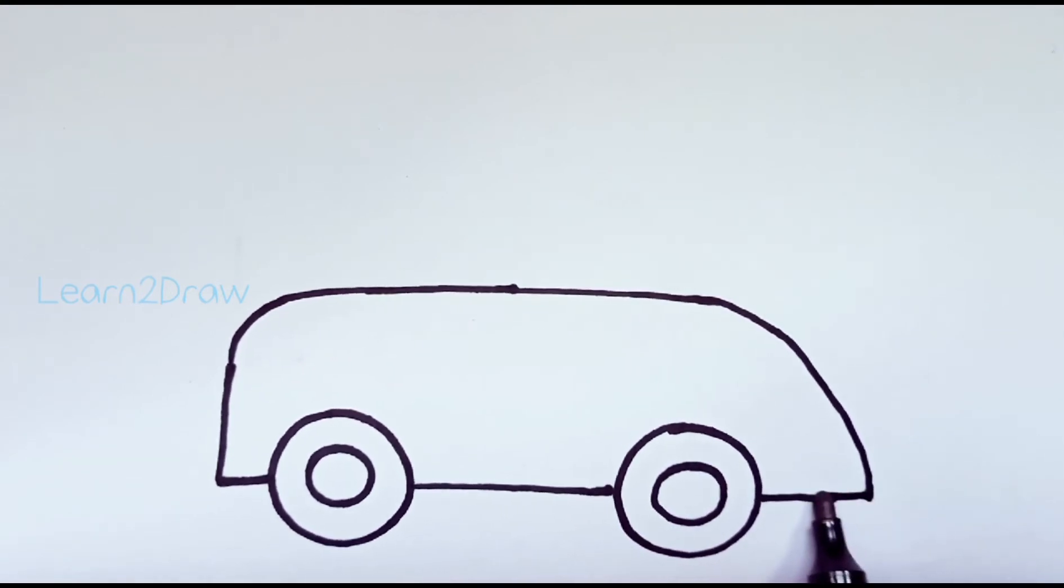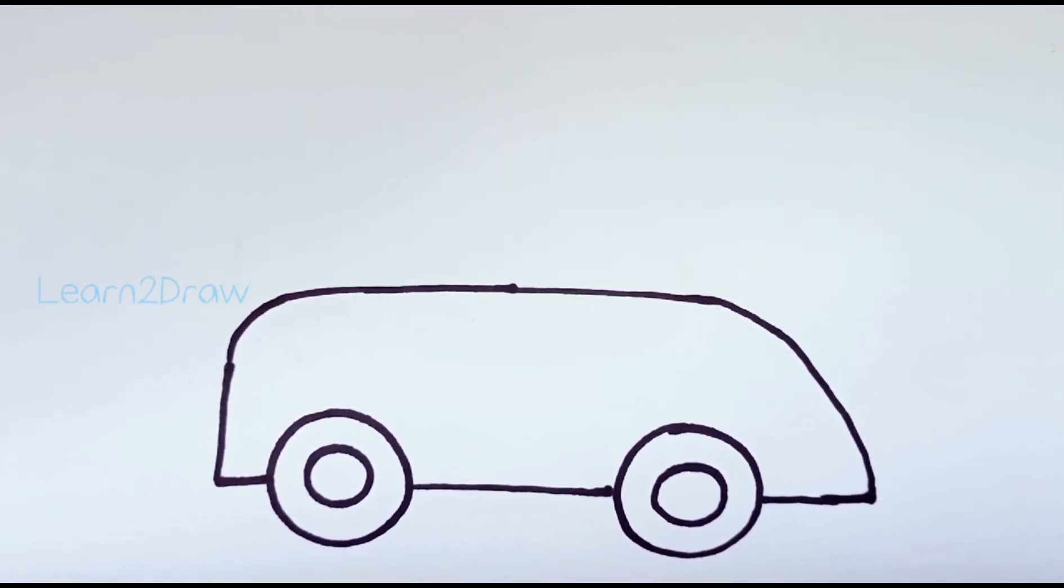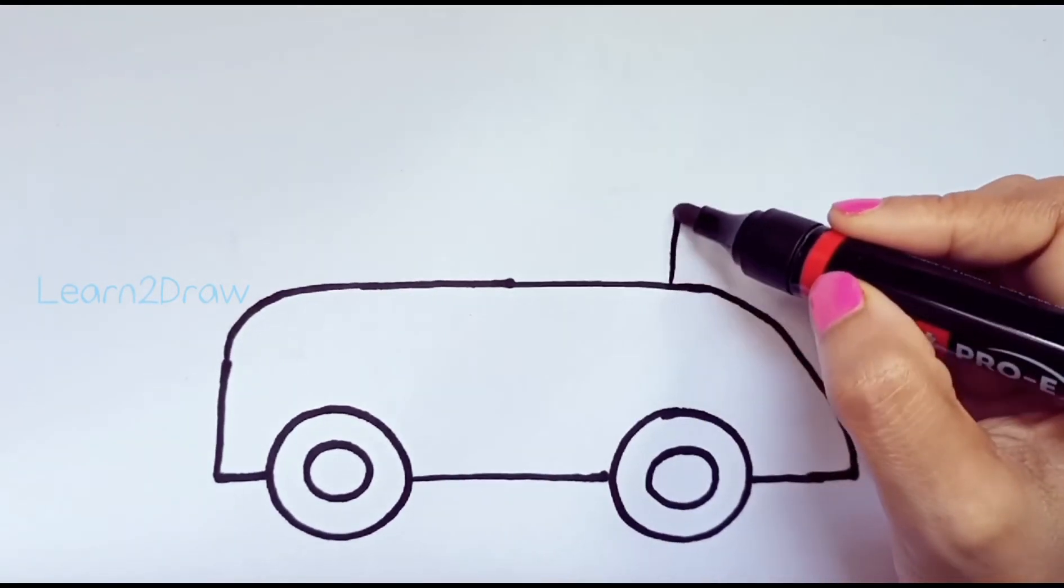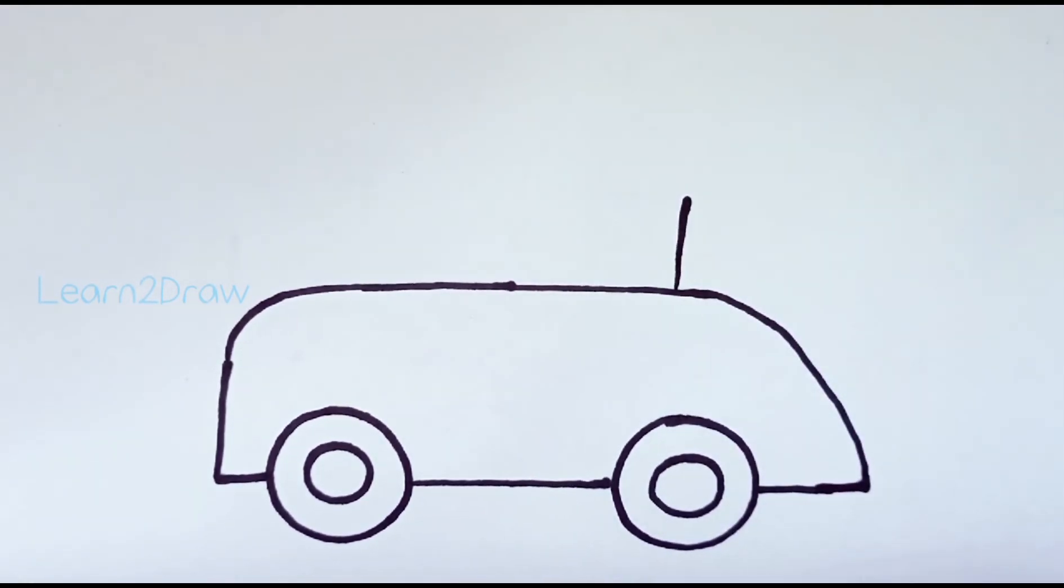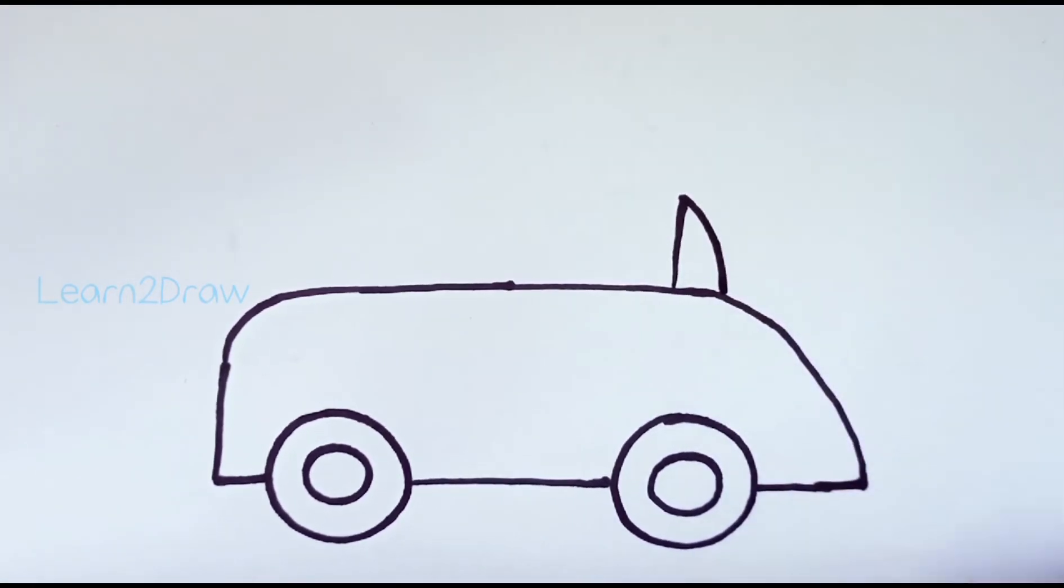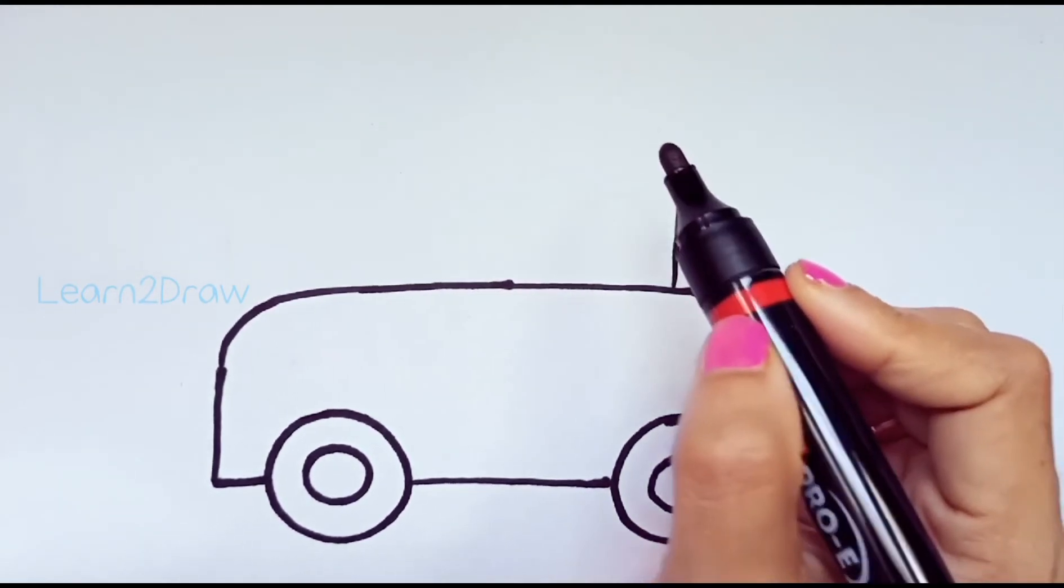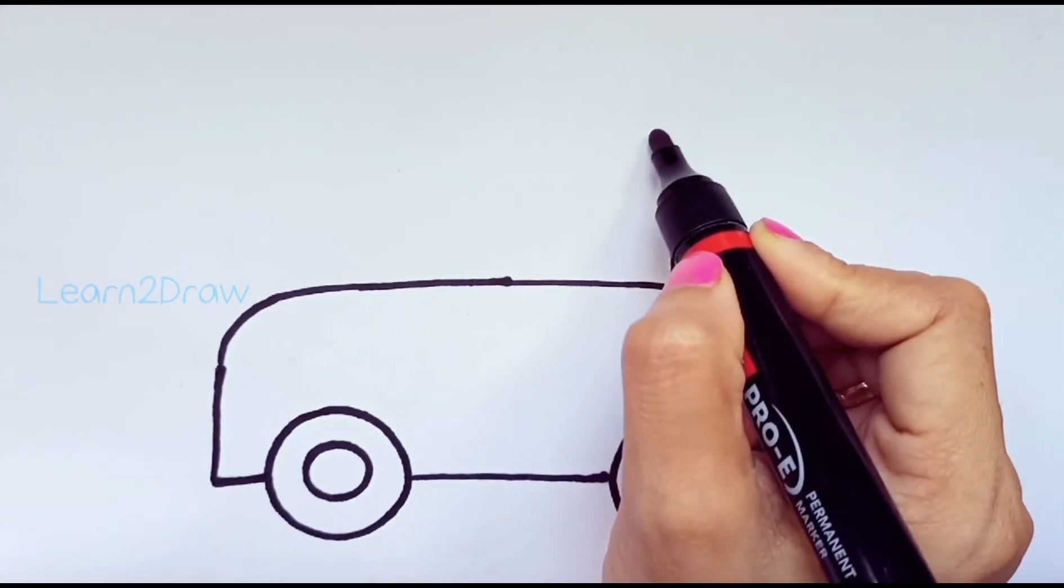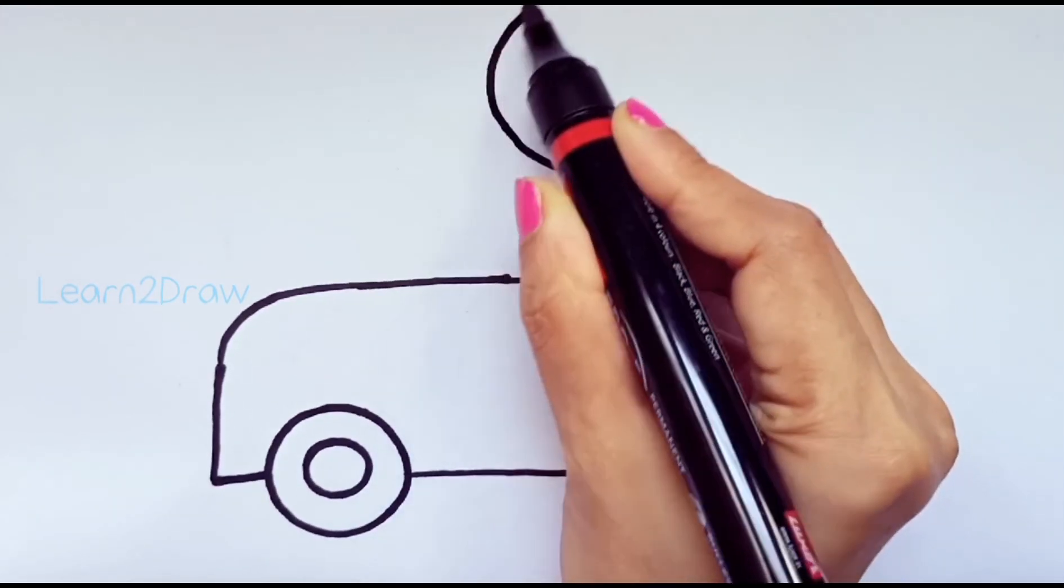Okay, now we'll draw another little line. Now we're going to draw a teddy bear sitting inside the car. For that, draw a big circle for the teddy's head.